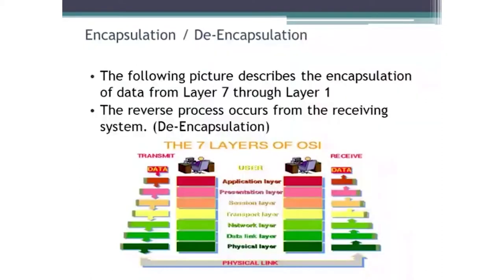As I talked about the OSI model, what I described was what we call the encapsulation process. Encapsulation was simply taking the original piece of data and at every layer in the OSI model adding more information to it to help facilitate the communications.